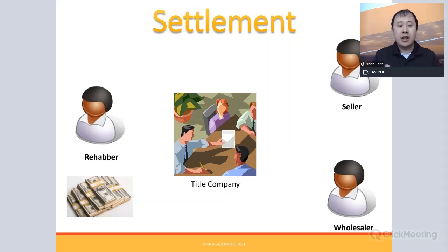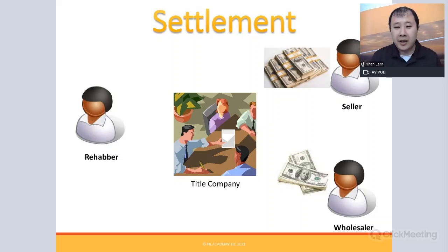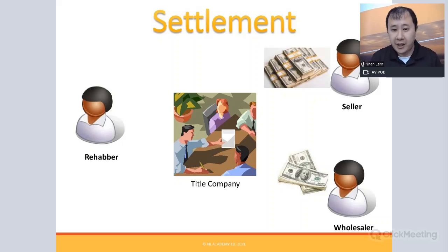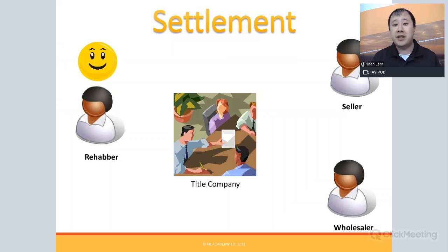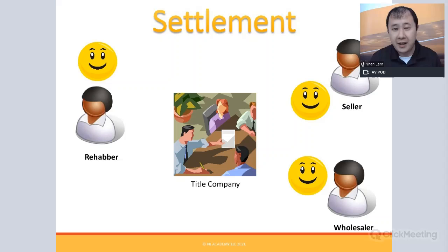At settlement, the rehabber brings funds — whether their own cash, a hard money lender, or other financing — to the title company. Once everyone signs and the county records the transaction, the seller receives their proceeds via wire or cashier's check. At the same time, you — the wholesaler — also receive your wholesale fee. This creates a win-win-win: the rehabber gets a new deal, the seller gets rid of an unwanted property, and the wholesaler earns a fee for marketing and negotiating.